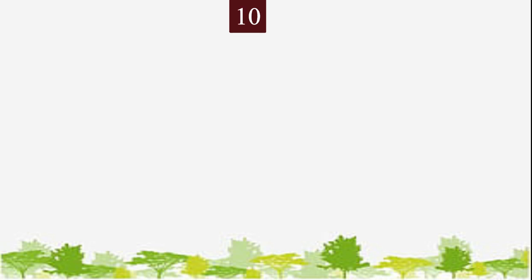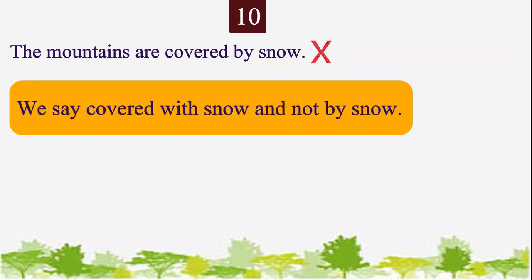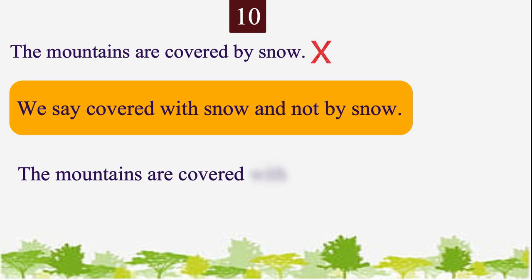Number 10 is: the mountains are covered by snow — this is incorrect. We will use the preposition with and not by, because snow is an object and we use the preposition with to emphasize the object used to carry out an action. Please repeat the correct sentence after me: The mountains are covered with snow.